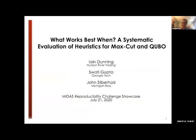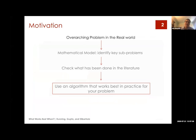Thanks so much for the introduction, really appreciate you organizing all of these events. We were drawn to a framework that shows up over and over again in real-world decision making. There's usually some complex real-world problem, and as mathematical modelers we seek to match it to a mathematical optimization model that can help us pick good decisions in our context. Once you've done that mathematical modeling step, you can turn to the literature and see what's been done for this problem. Ideally, you're going to identify some algorithm that you think is going to work well in practice for your particular real-world problem.